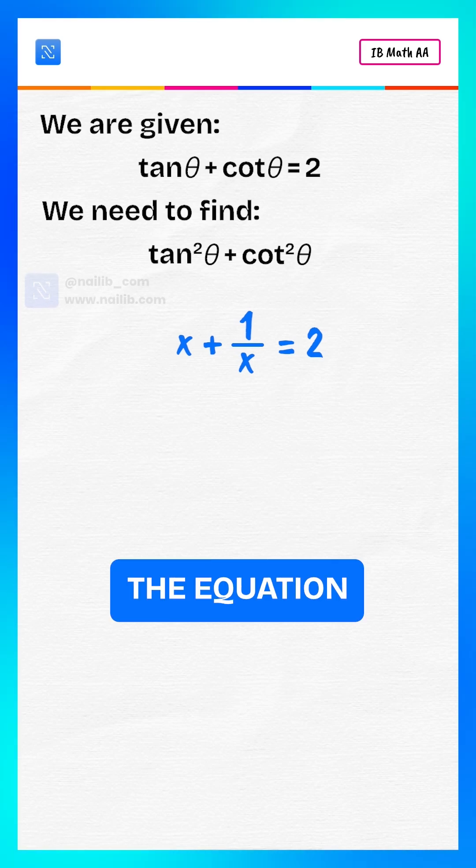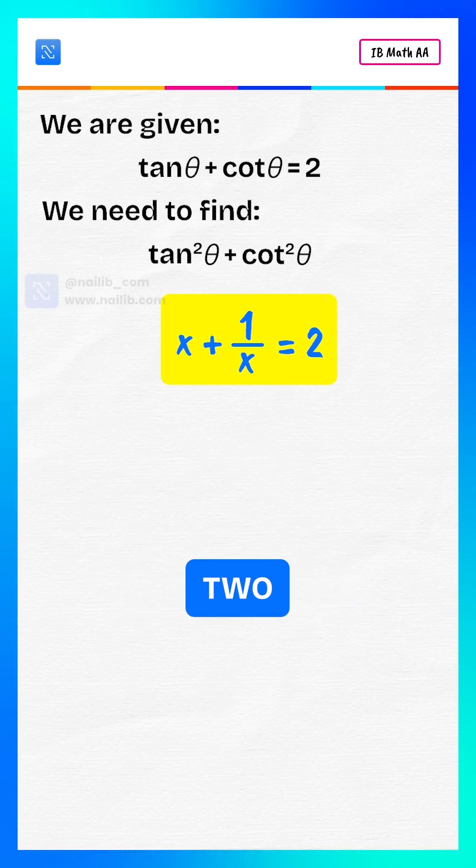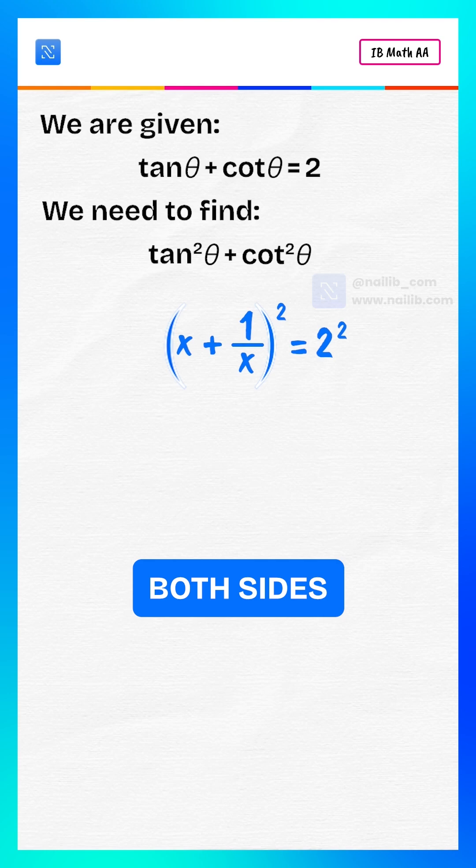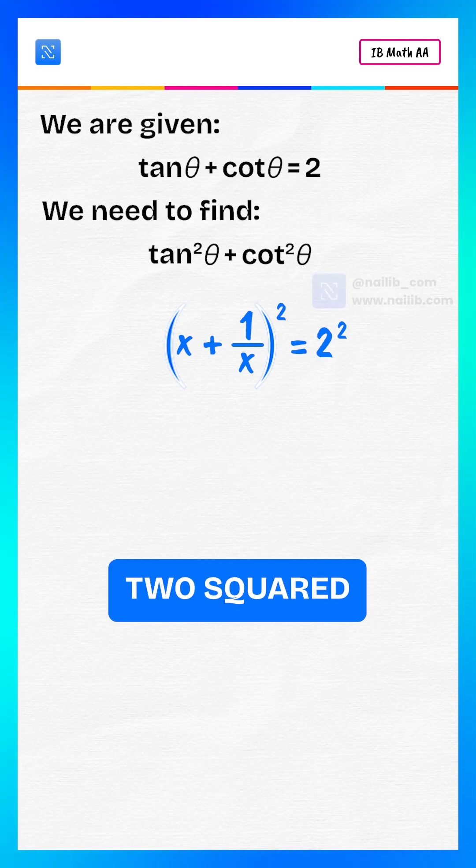So the equation becomes x plus 1 by x equals 2. Squaring both sides, x plus 1 by x squared equals 2 squared equals 4.